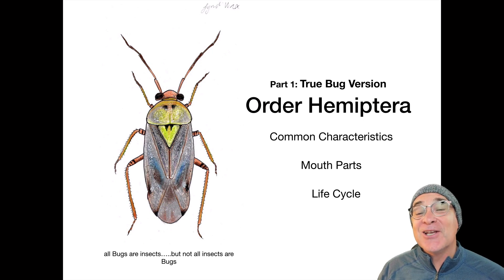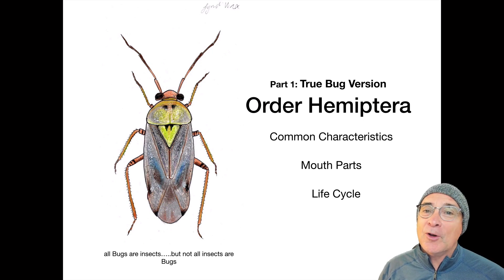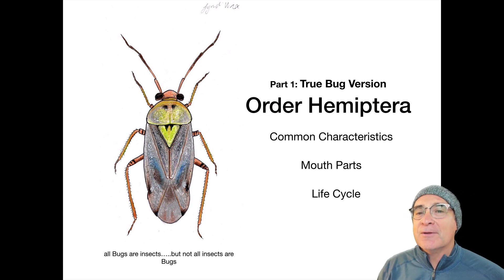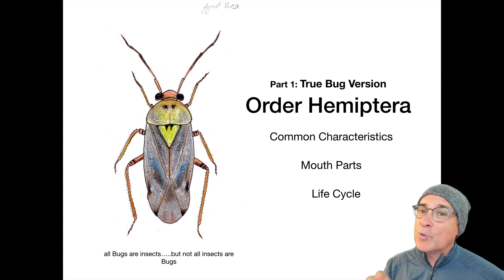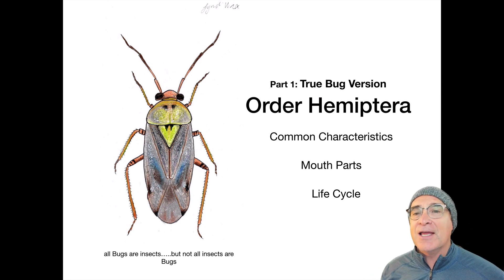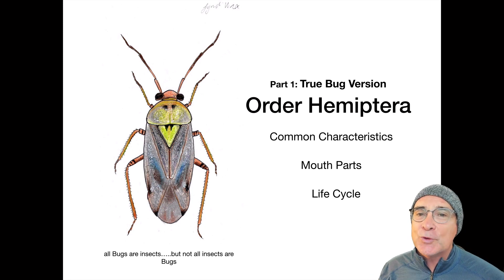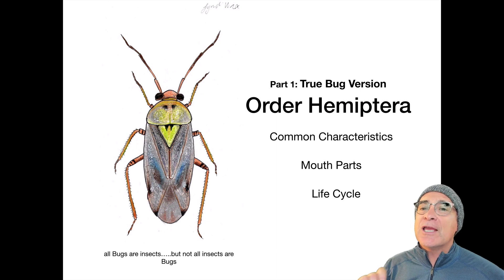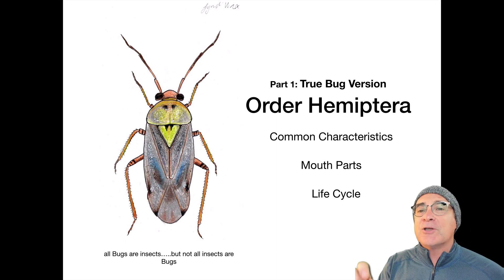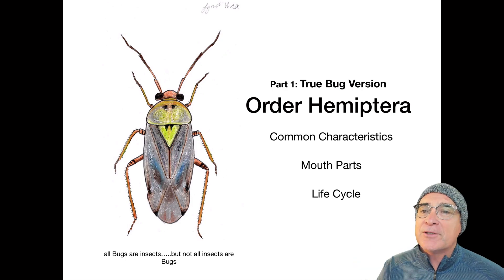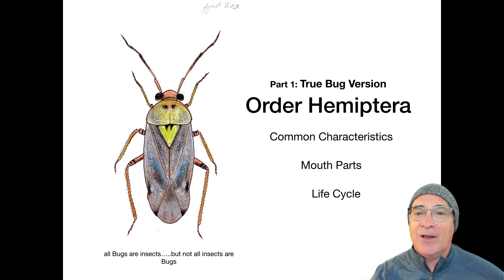Welcome! Today's lesson is on insect identification, and we're looking specifically at the order Hemiptera. Hemiptera is broken into smaller sub-orders, and the sub-order we're concentrating on today is the true bugs. We'll be exploring their certain characteristics, their mouth parts, as well as their life cycle.